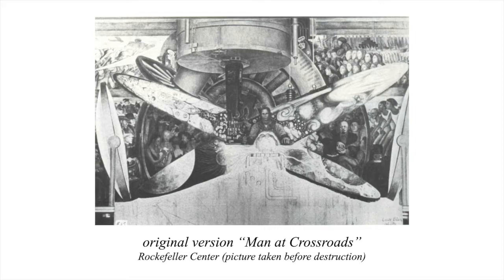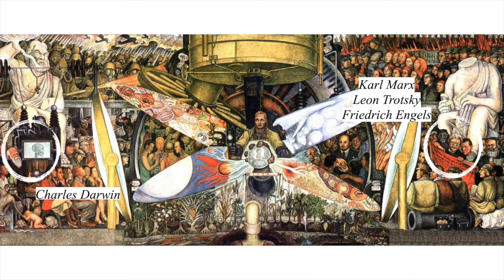Concerned that Rockefeller would destroy the work, Rivera had asked an assistant to take photographs of the mural before it was destroyed. Using them as a reference, Rivera repainted the mural, though at a smaller scale, at the Palacio de Bellas Artes in Mexico City, where it was renamed Man, Controller of the Universe. The new version included a portrait of Leon Trotsky alongside Karl Marx and Frederick Inglis at the right, and others including Charles Darwin at the left.